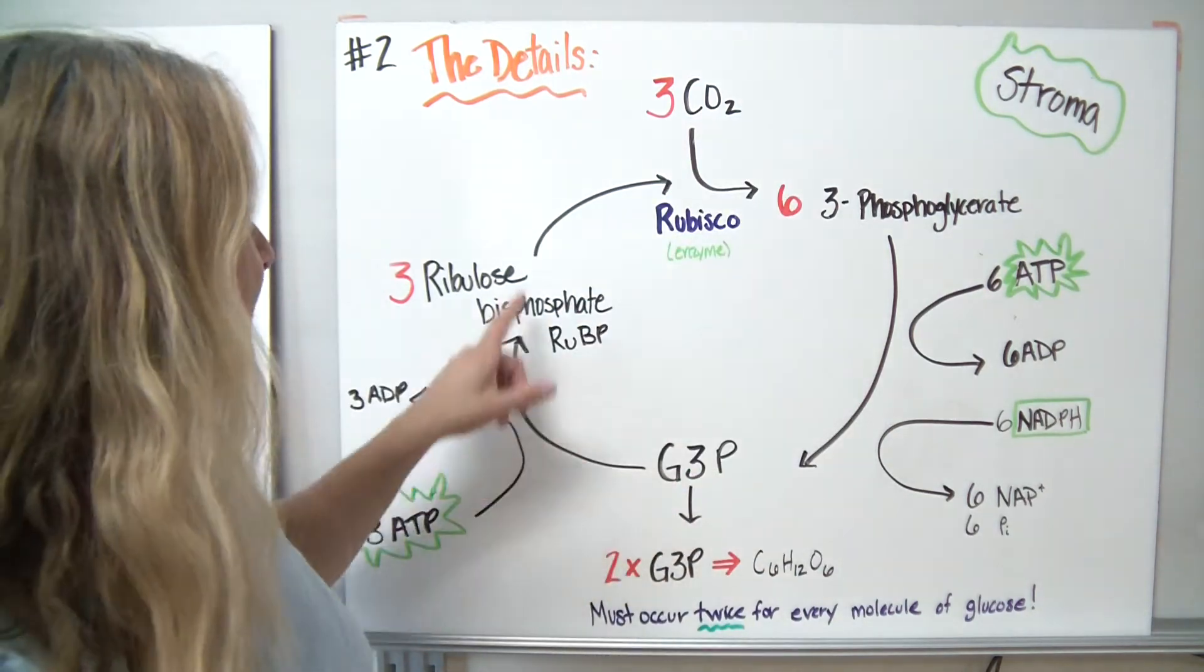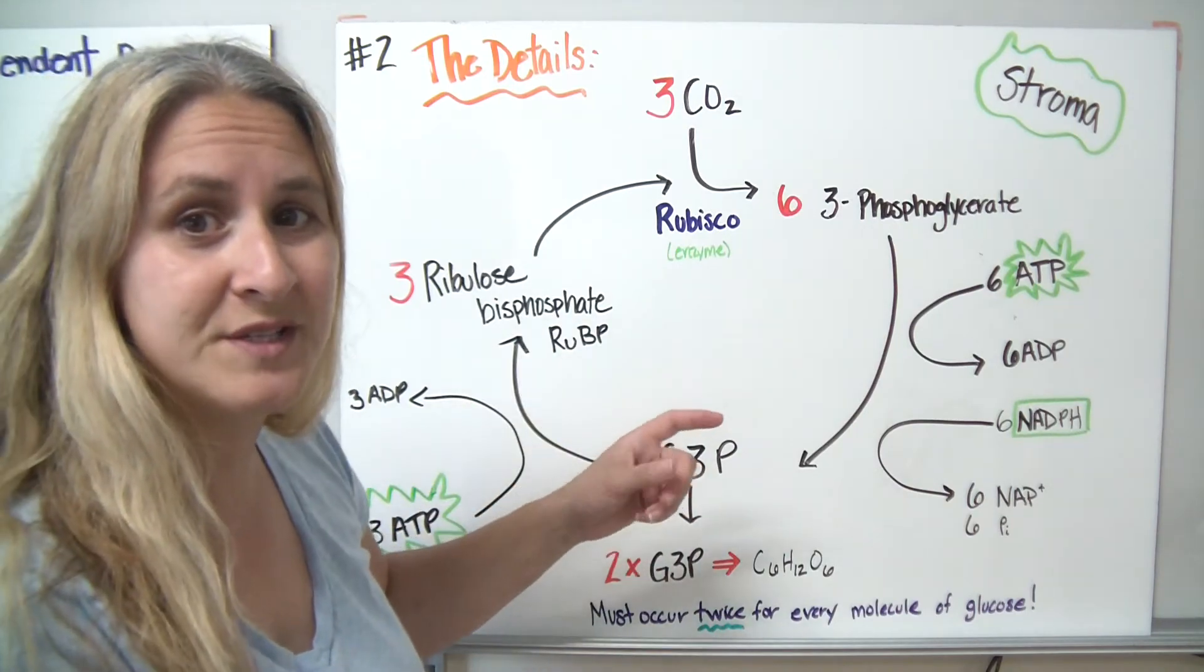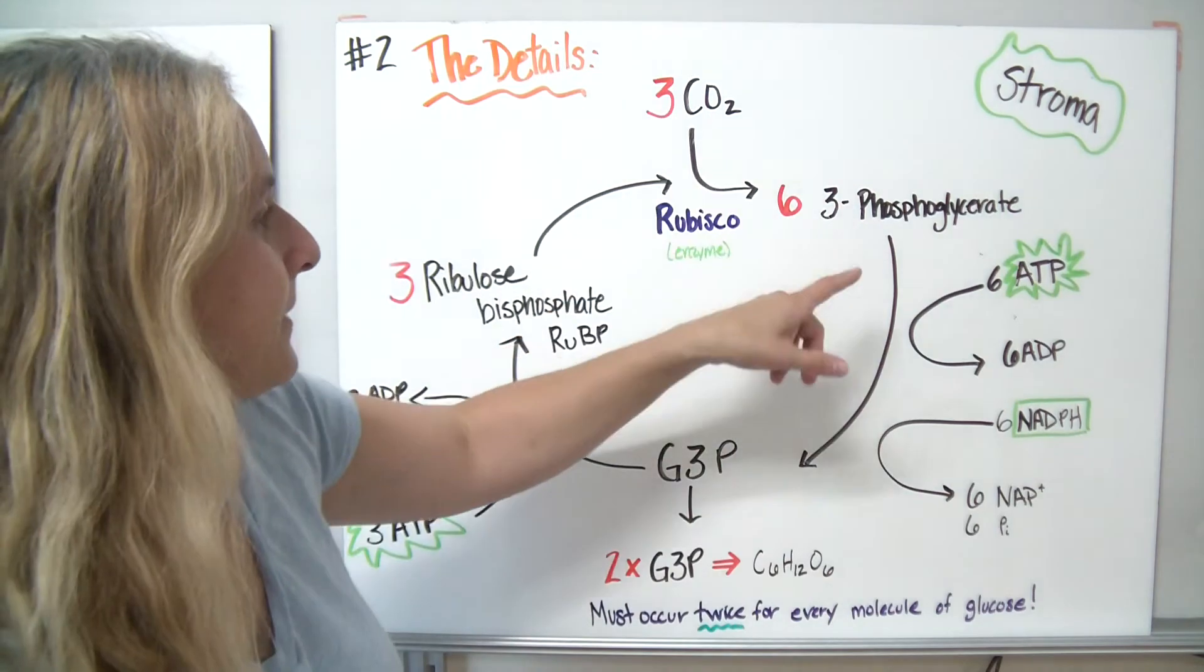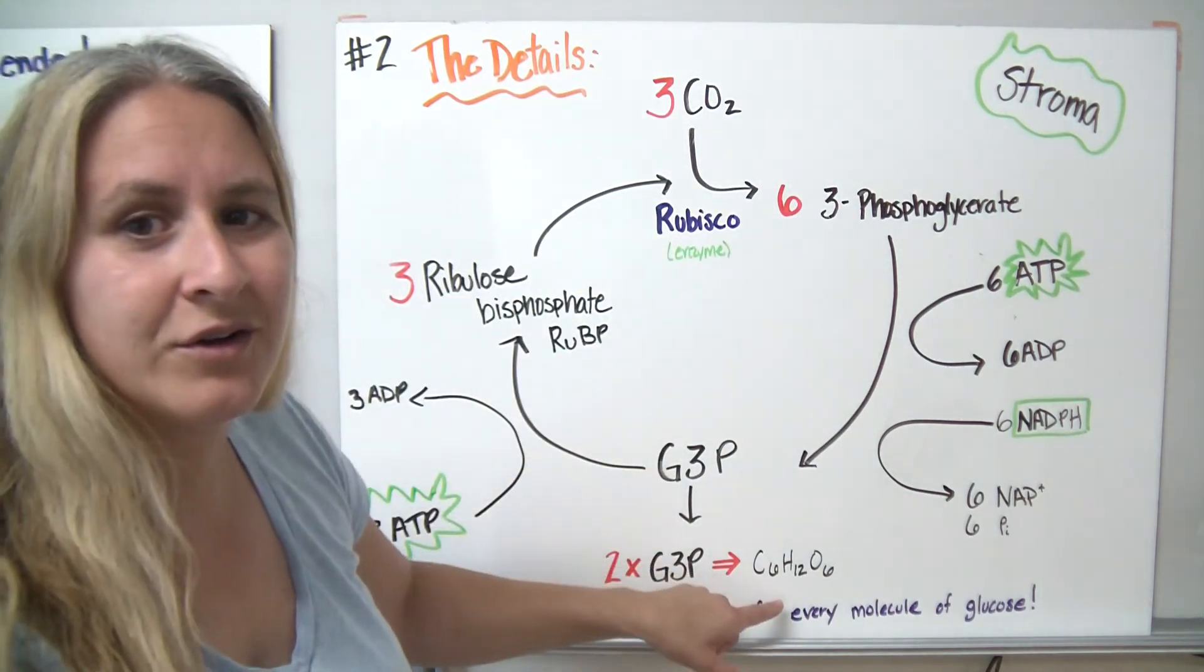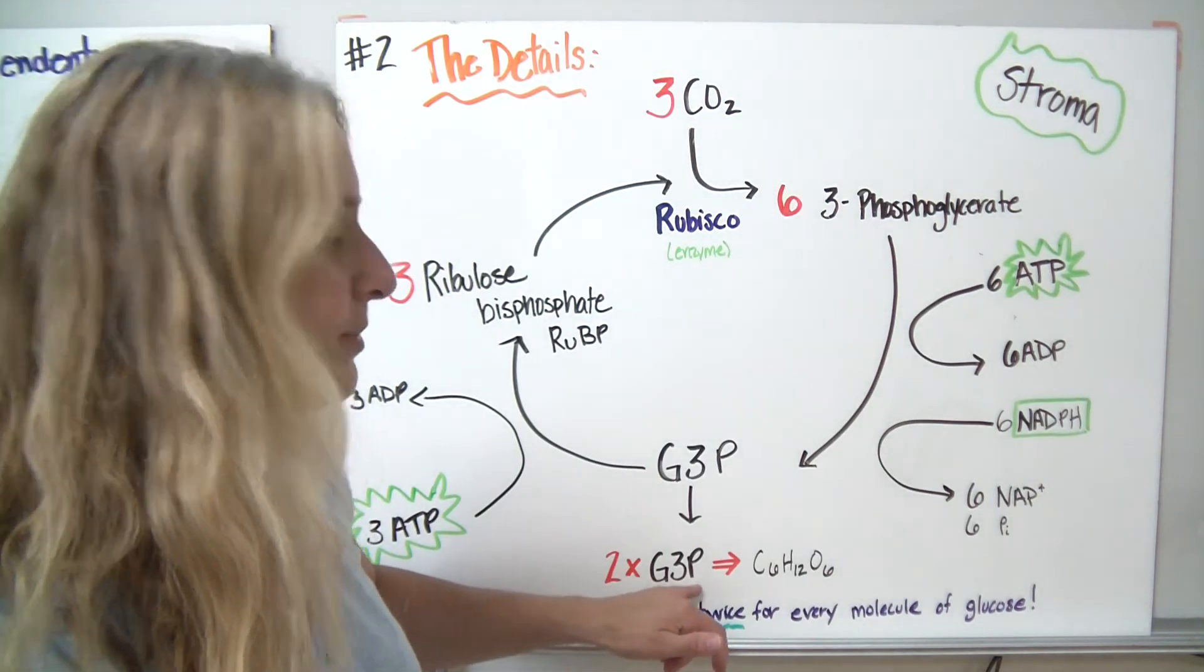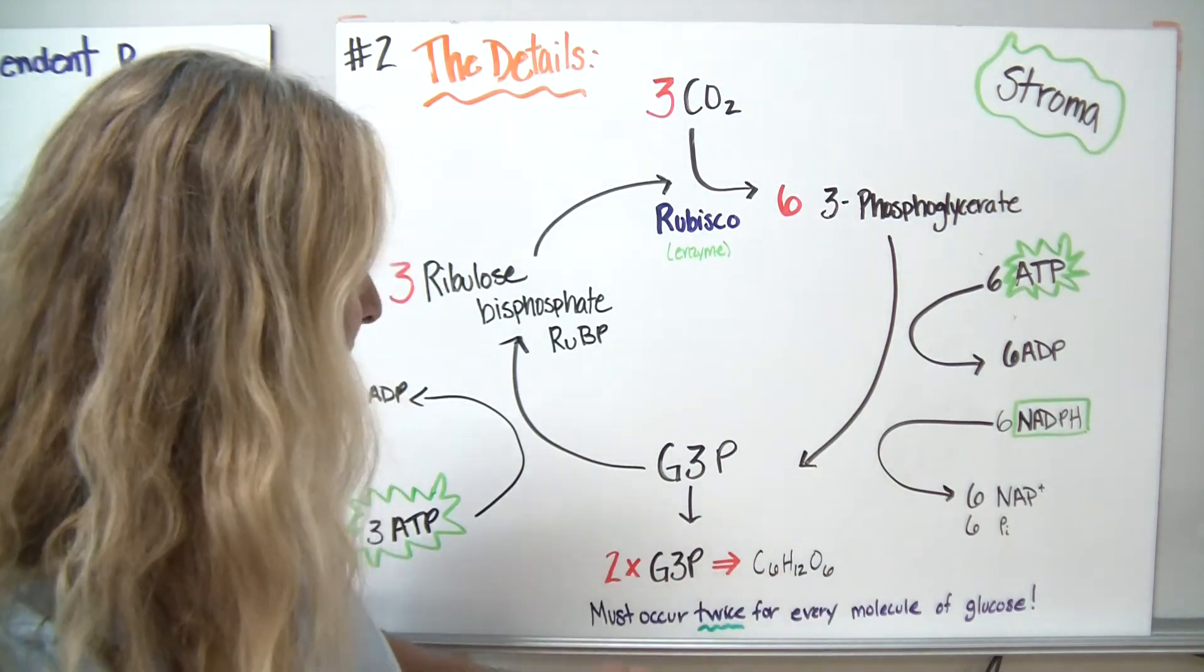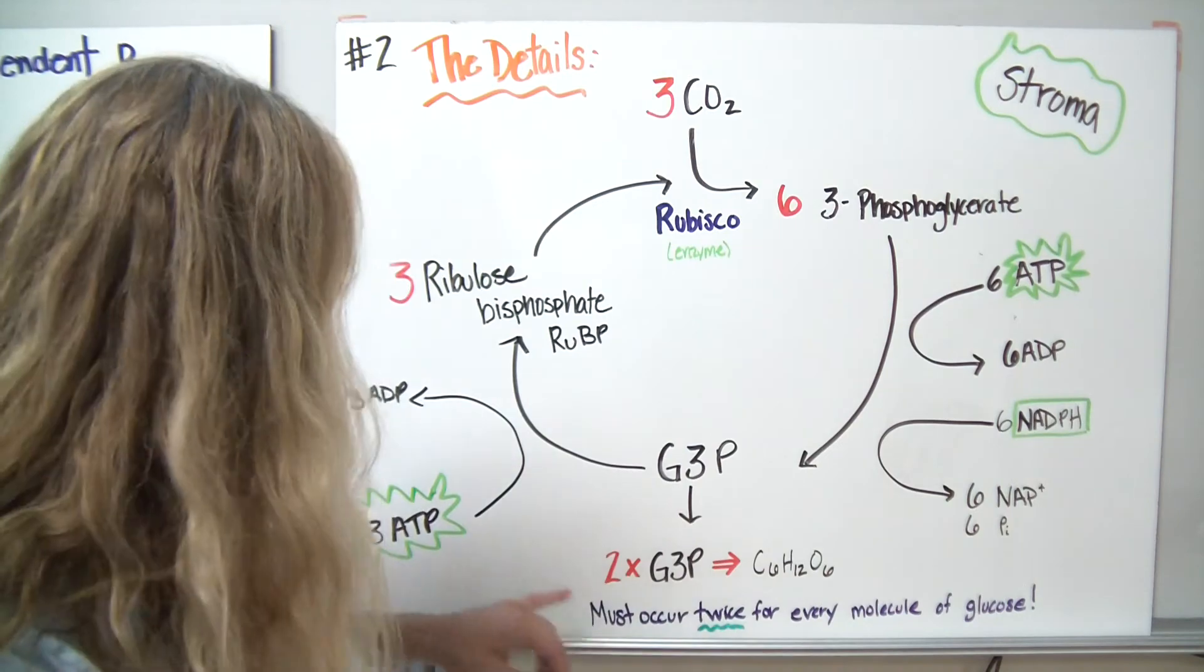If you remember correctly, we have to do this process twice because we're splitting glucose into two 3-carbon compounds. We're going to have to do this process twice to make our glucose molecule. We have two G3P molecules combining to make C6H12O6. It has to happen twice in order to make every molecule of glucose.